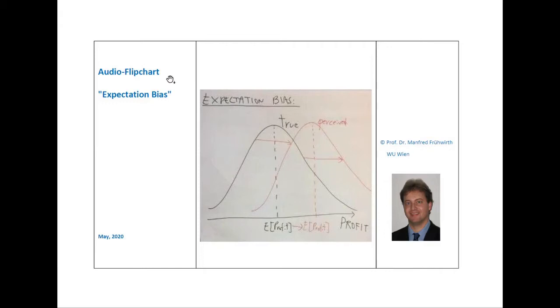The purpose of this audio flip chart is to show you the effect of the so-called expectation bias. Concerning the impact of overconfidence on the perceived probability distribution, there are two different versions of overconfidence: the expectation bias and the risk bias. This audio flip chart focuses on the expectation bias.